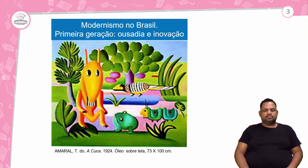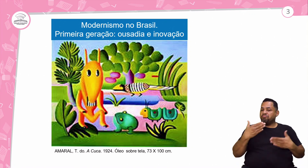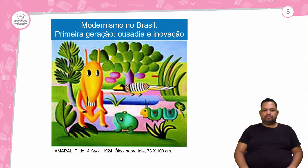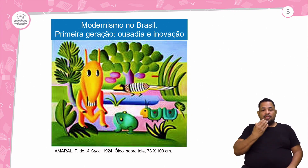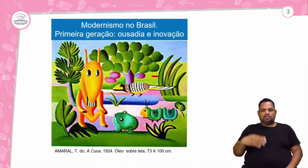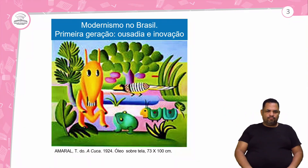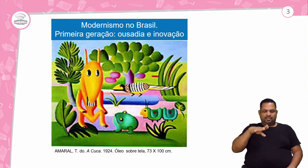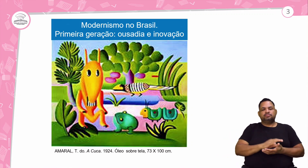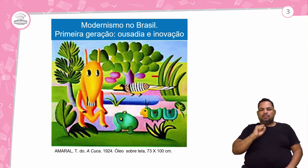Vamos lá para o nosso texto. Que texto é esse? É essa obra, essa tela aqui, que tem o tema a Cuca. Ela foi feita em 1924. De quem é essa obra de arte? É de Tarsila do Amaral. E essa obra do modernismo no Brasil, da primeira geração, tem ousadia e inovação.